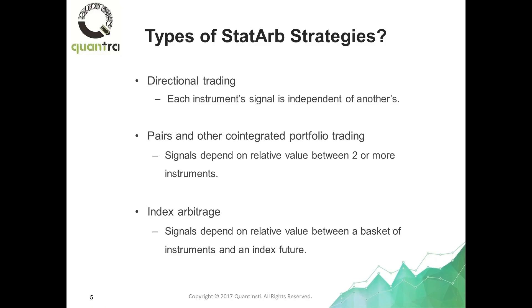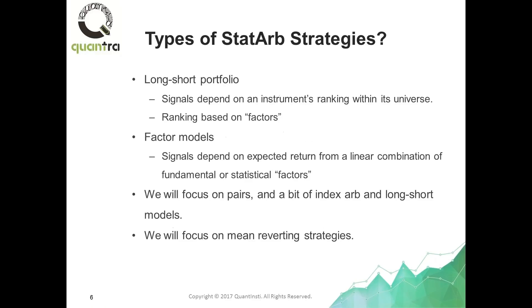The traditional index arbitrage, where the basket of instruments is composed of all the components of the index with capital allocation in the exact same amount as the index, is no longer profitable. So what we will discuss in this course is a kind of modified index arbitrage, where the basket of instruments is selected based on some criteria, not simply to replicate exactly what the index is.